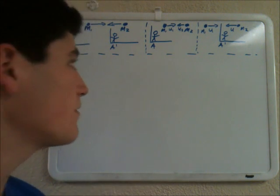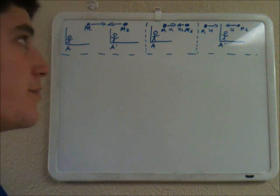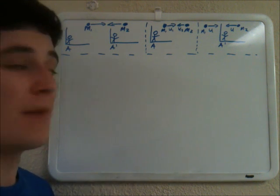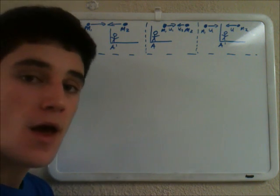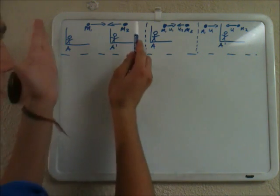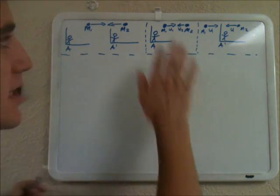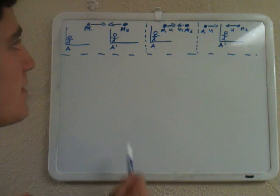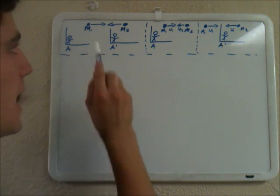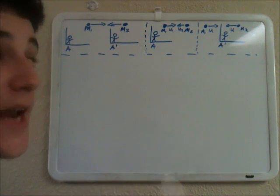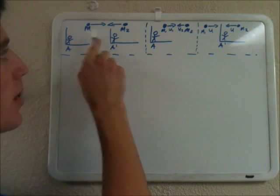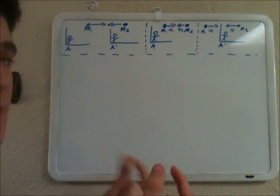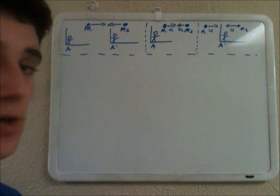I'm going to derive the relativistic equations for momentum using this example. We have two objects with mass m1 and m2 such that at rest m1 is equal to m2. So when these are both not moving, they're in the same reference frame, their masses are equal.